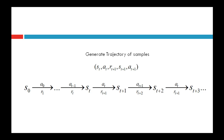To generate a trajectory of samples, we initialize the agent in a particular episode with some initial state S0. In state S0, the agent takes action A0, receives reward R1, and makes a transition to state S1. Again it takes action A1, gets reward R2, makes a transition to S2, and the process continues until the episode ends or the maximum number of steps is reached. We can generate several such trajectories by initializing the agent with some initial state and assigning a random policy for collecting samples.